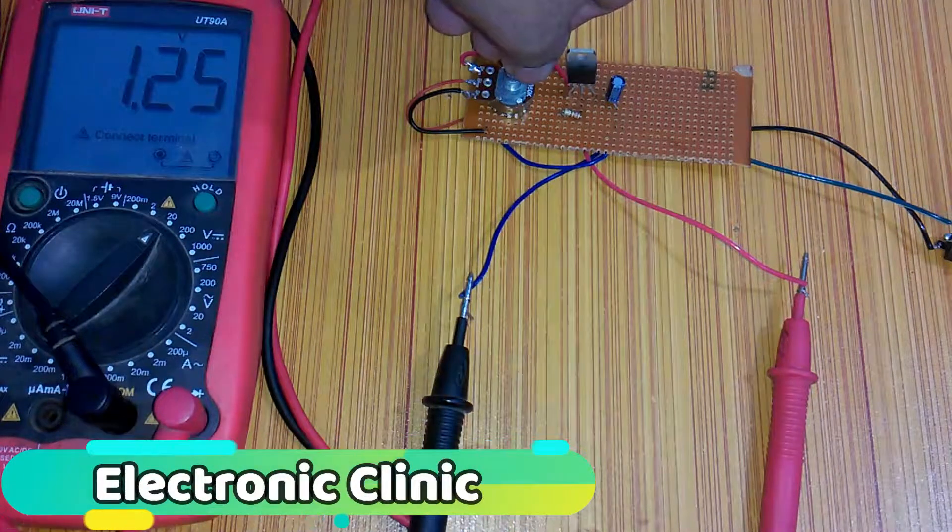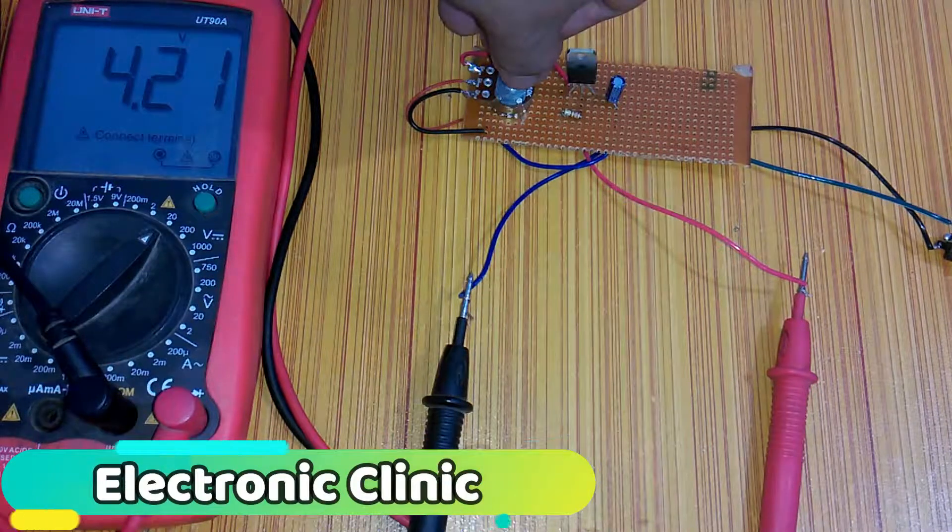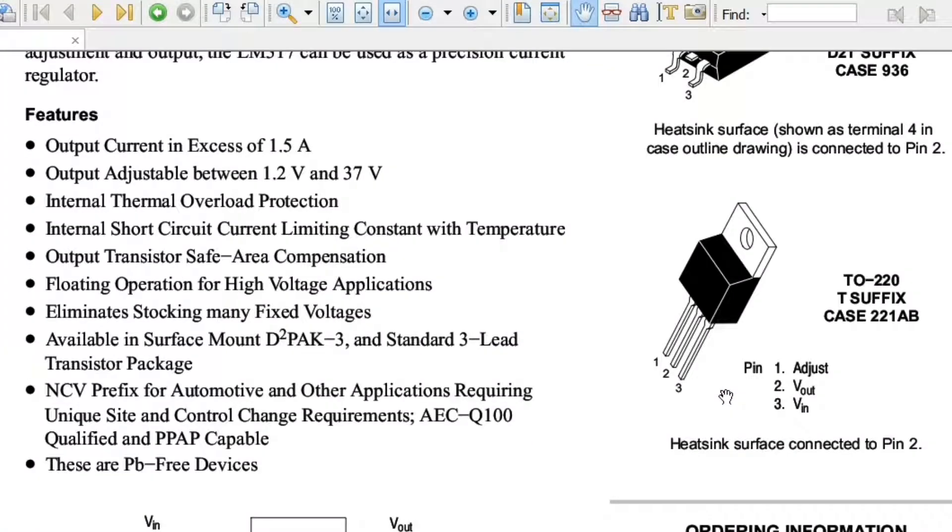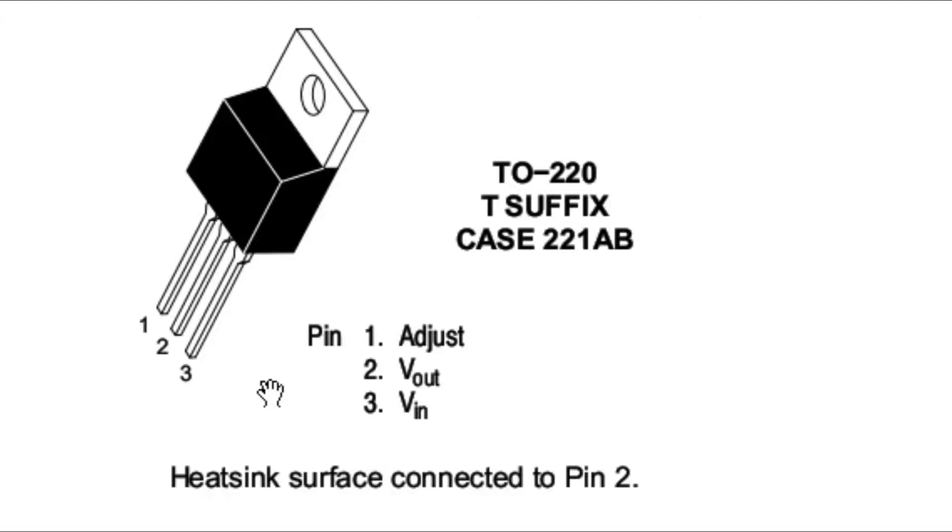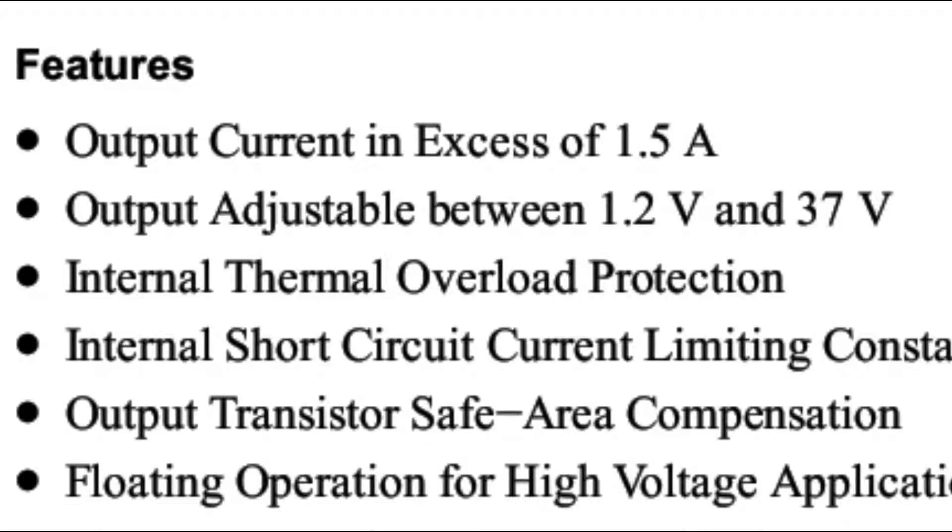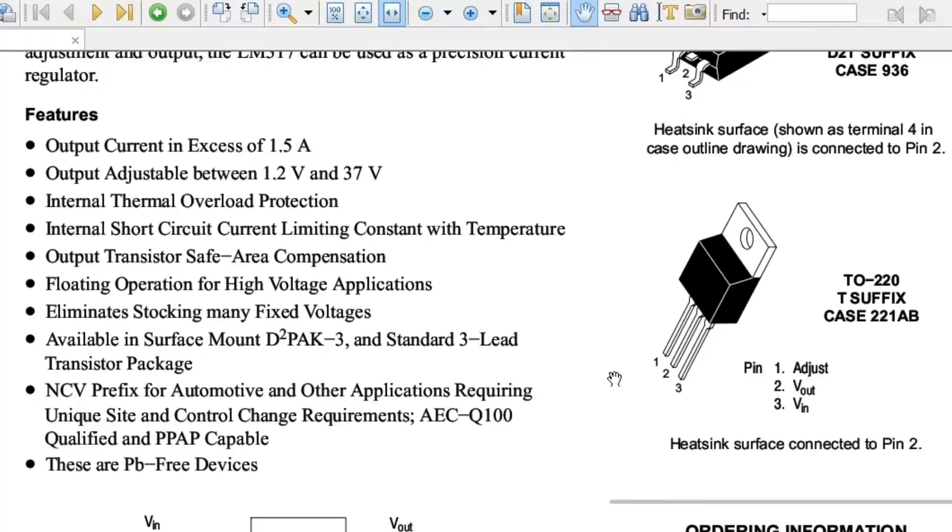The LM317 is a fully adjustable three-terminal positive voltage regulator capable of supplying 1.5 amps with an output voltage ranging from around 1.25 volts to 37 volts.